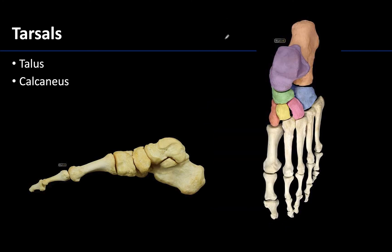Lastly we get to the foot, and there are two tarsal bones we expect you to identify. The superiormost tarsal bone, shaded here in pink, is the talus, which when you look at its superior surface is almost all smooth. That surface is an articular surface where the distal tibia will sit to form the talocrural or ankle joint. You can also see the talus from this medial view to appreciate the entirety of its shape.